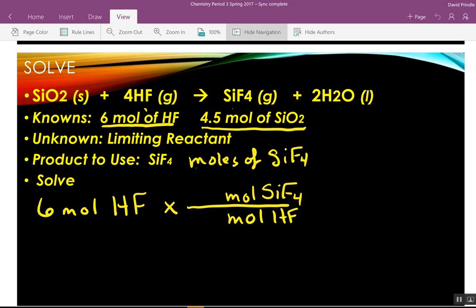So, what we're looking for is moles of SiF4. So, let's start at six moles of HF. We want to get to moles of SiF4 and away from moles of HF. What's the ratio of SiF4 to HF? One to what? One to four. So, what cancels? Moles of HF. So, what is six divided by four? One point five moles of SiF4.